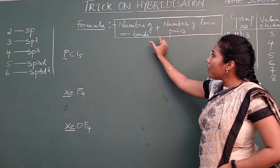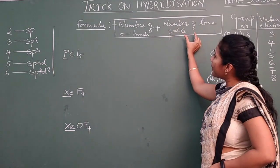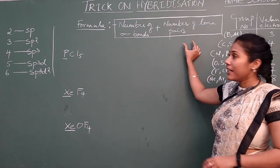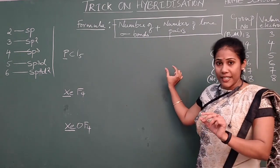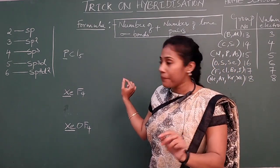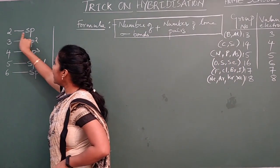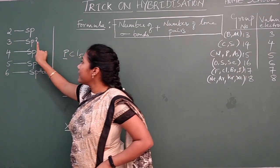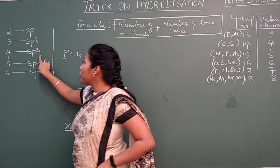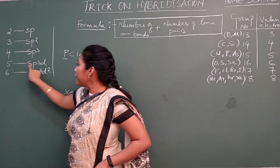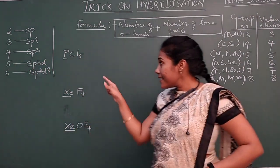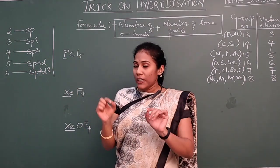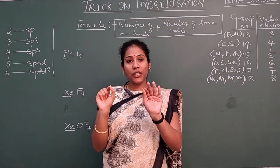The formula is: number of sigma bonds plus number of lone pairs. After adding, you get a certain digit. If you get 2, it is SP hybridization; if 3, SP2; if 4, SP3; if 5, SP3D; and if 6, SP3D2. This is the basic information you need.